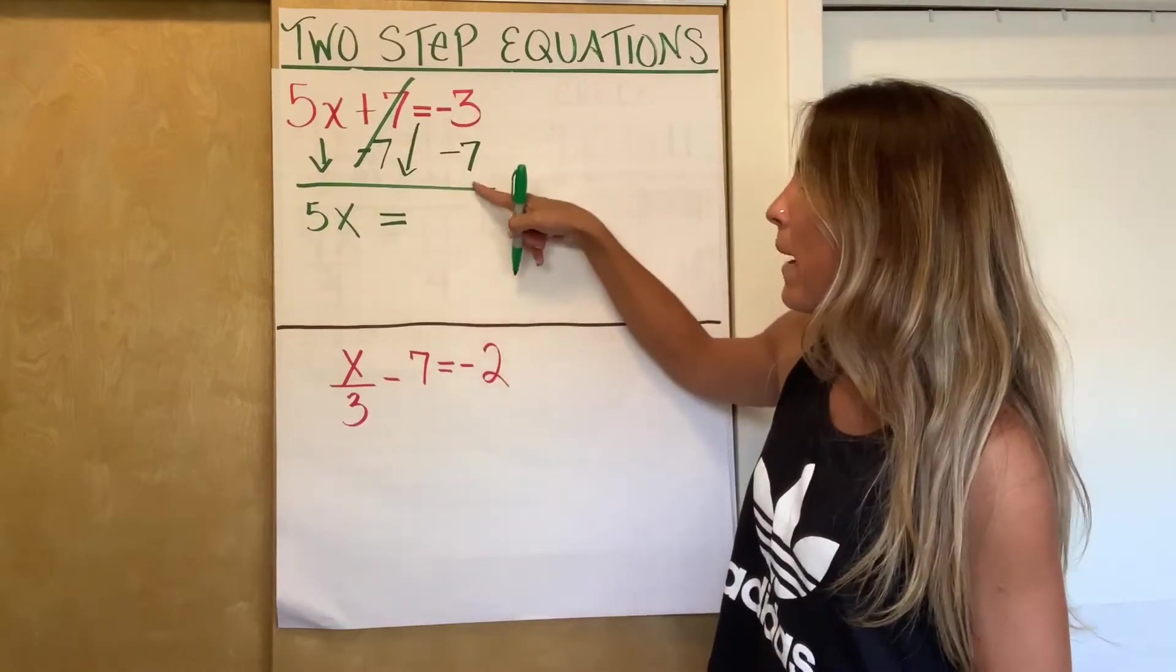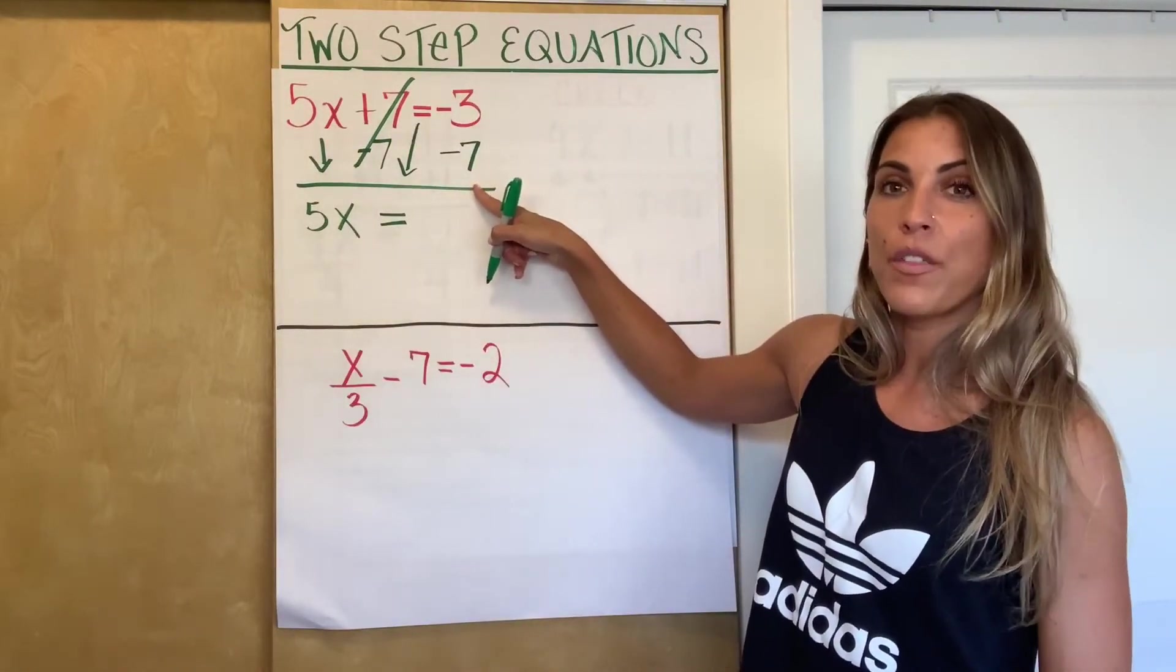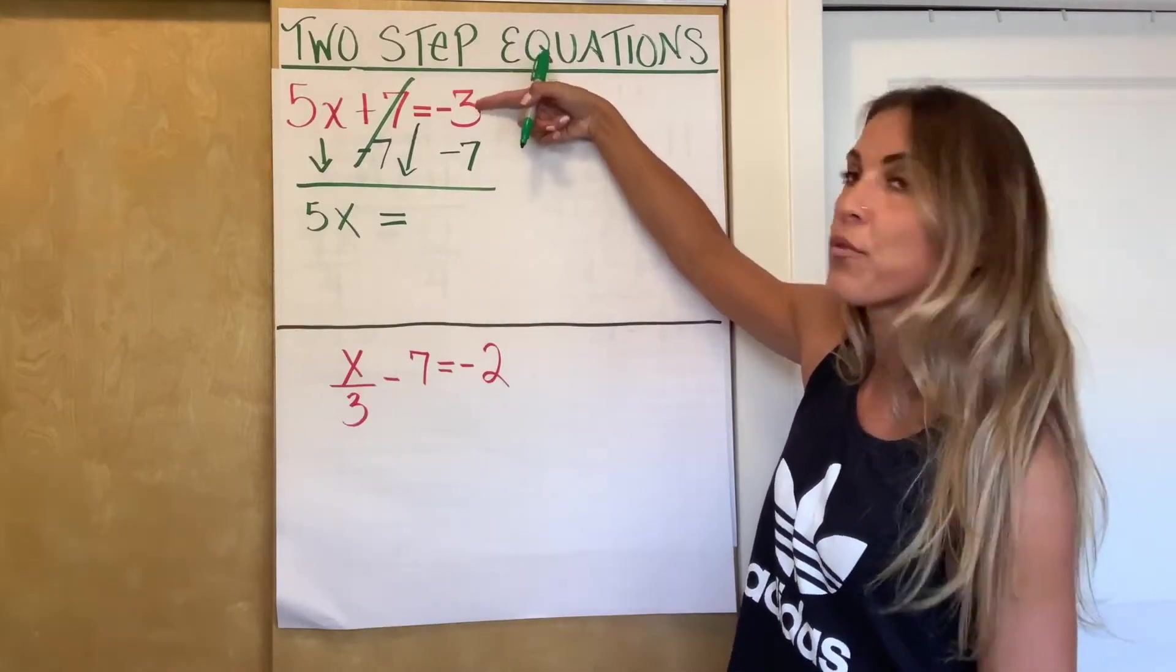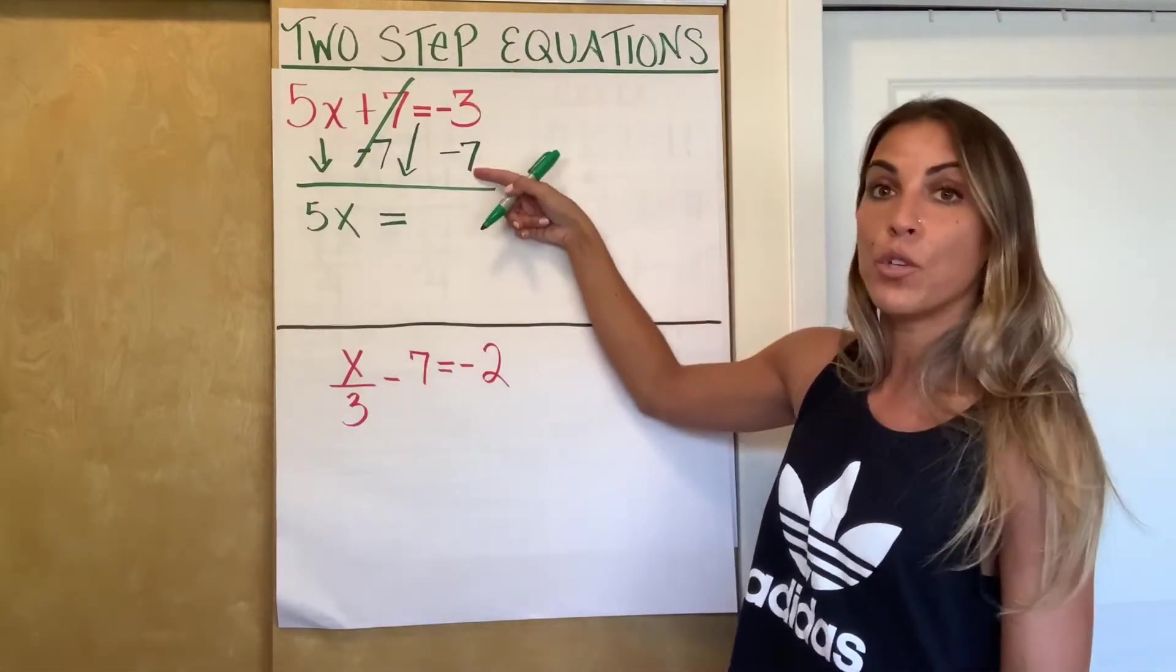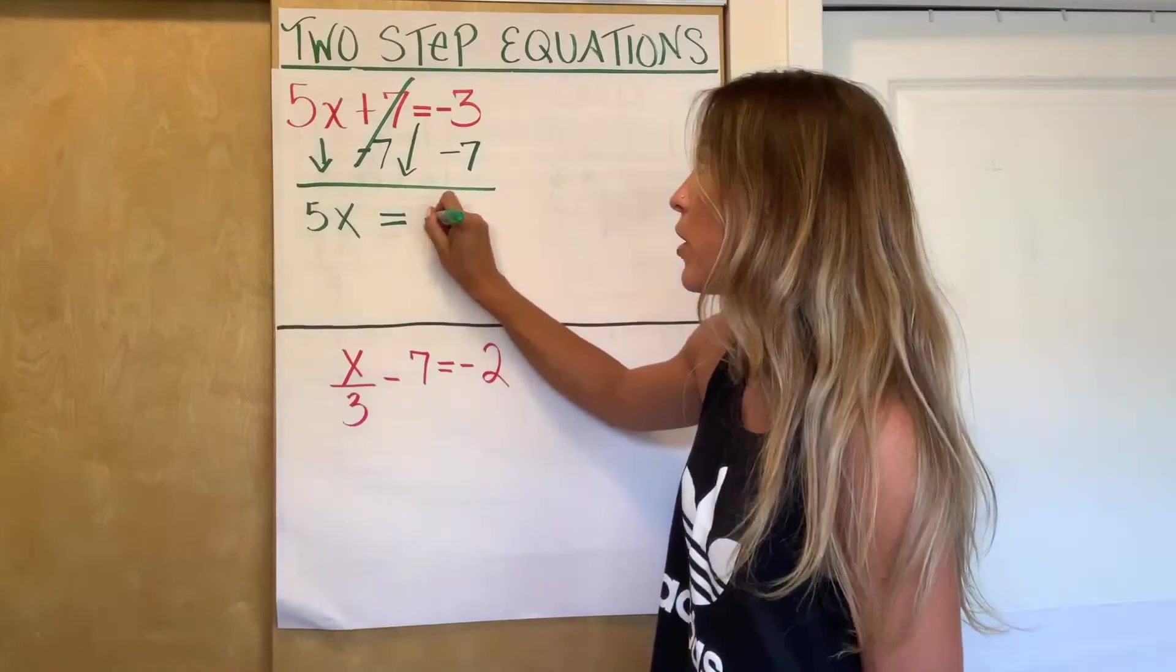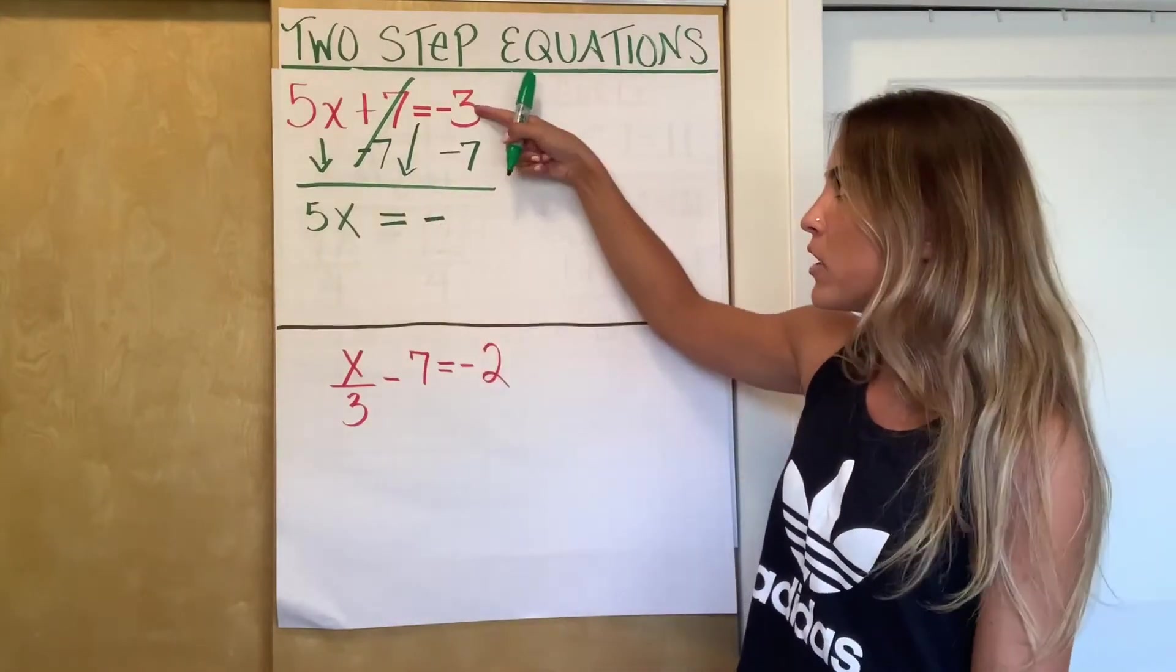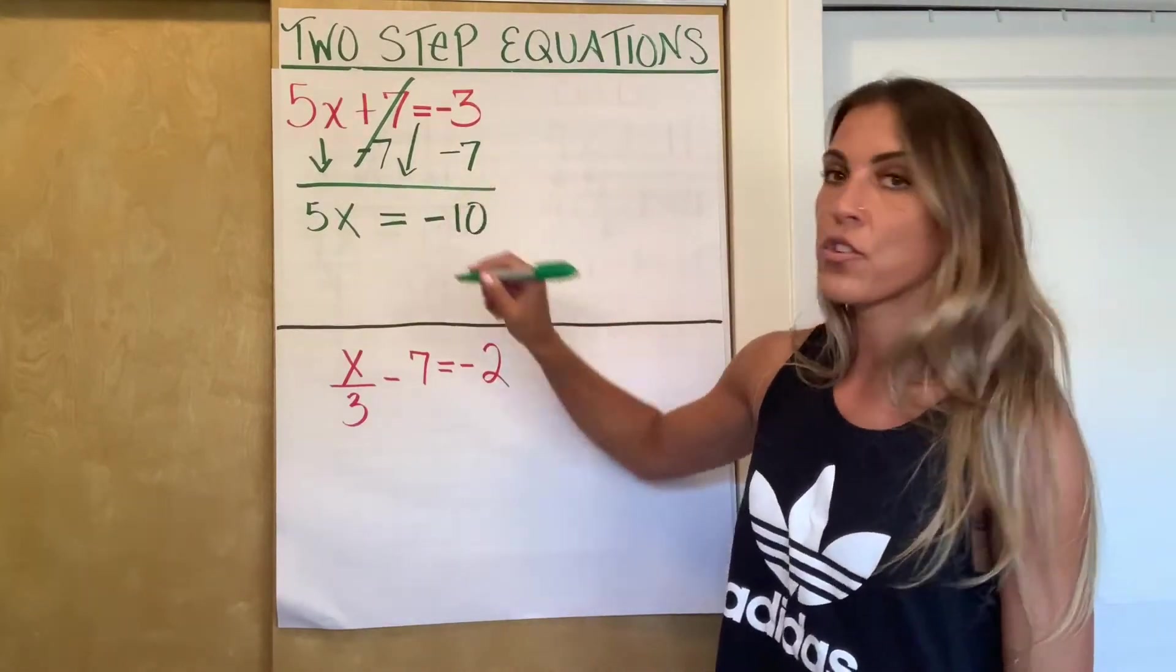Negative 3 minus 7. If you watch the one-step video, I always tell you the thing about integers like money. So negative 3, you owe $3. Negative 7, you owe $7. So clearly I'm still going to owe money. How much money do I owe? 10 altogether. So negative 10.